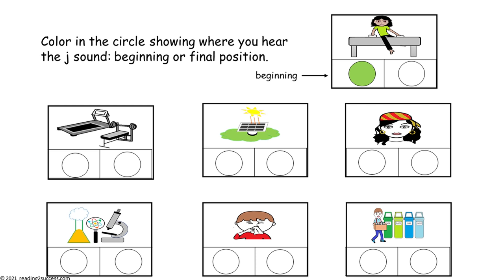We have the example of gymnast — in gymnast, we hear the J sound at the beginning, so the green circle is colored in. Let's look at the completed example. Gym is in the beginning position. Energy is in the final position. Gypsy is in the beginning position. In the bottom row: biology — ending position. Allergy — final position. And ecology, where he is recycling — we hear the soft G sound in the final position.